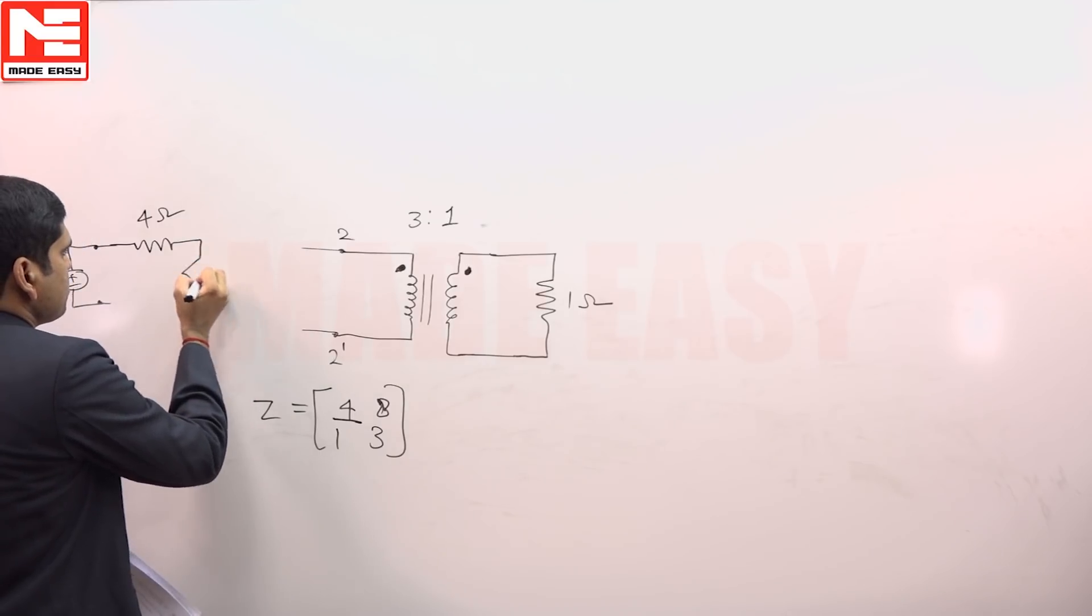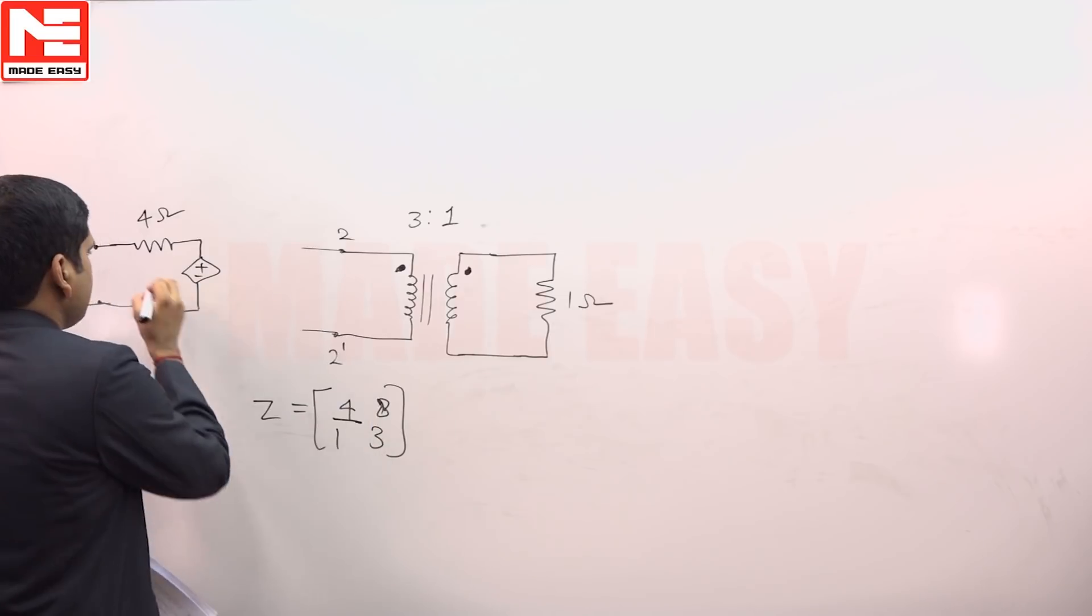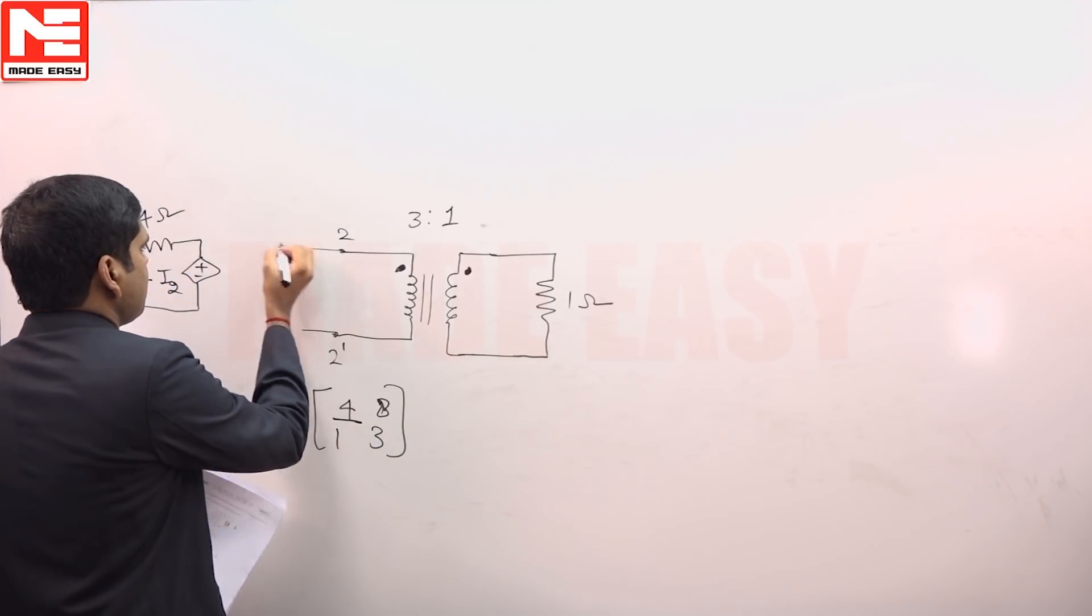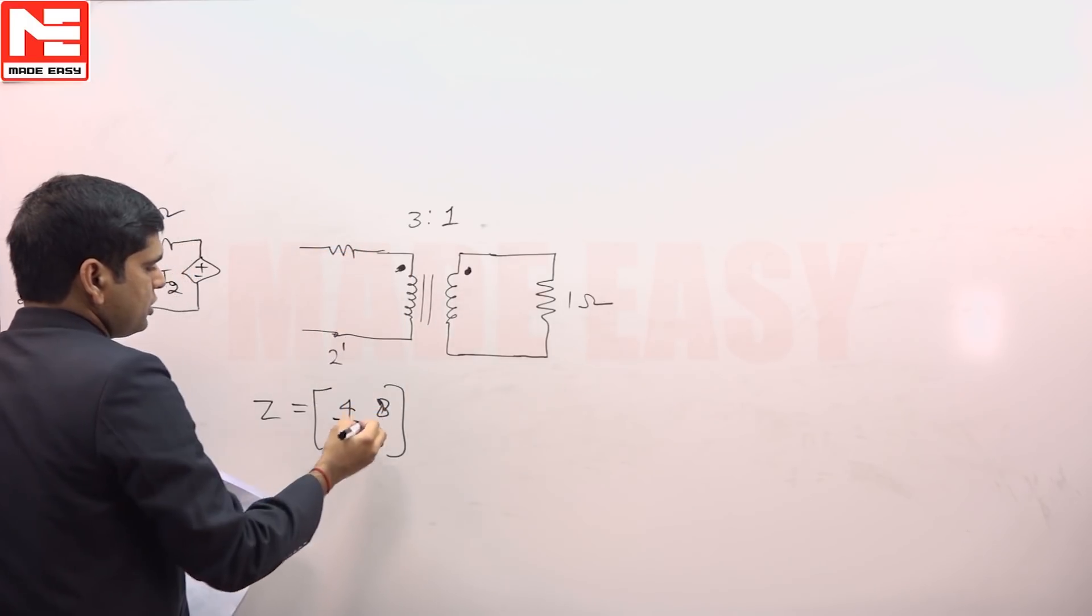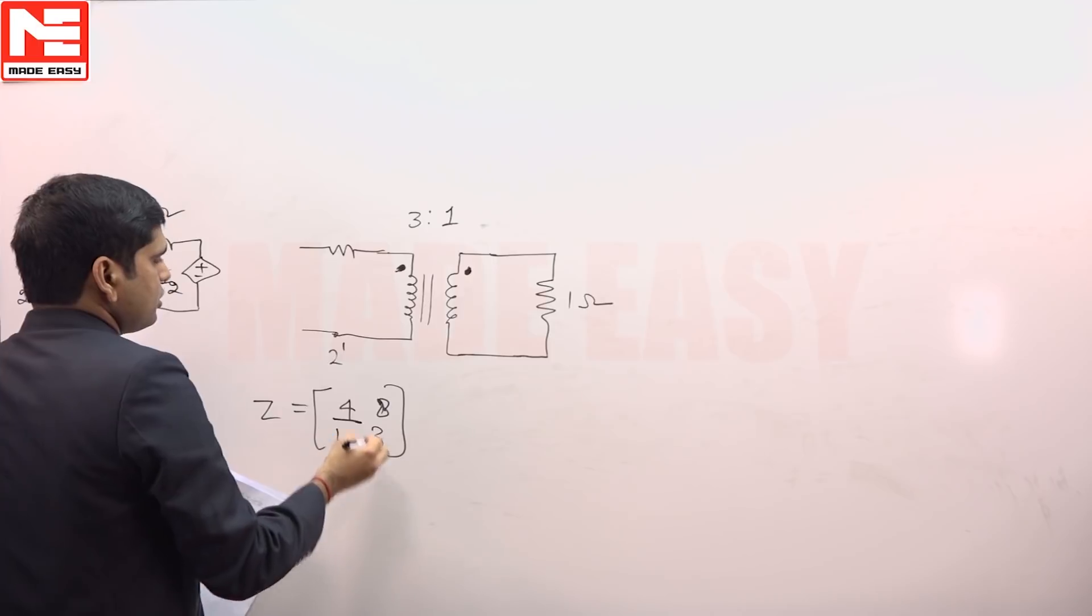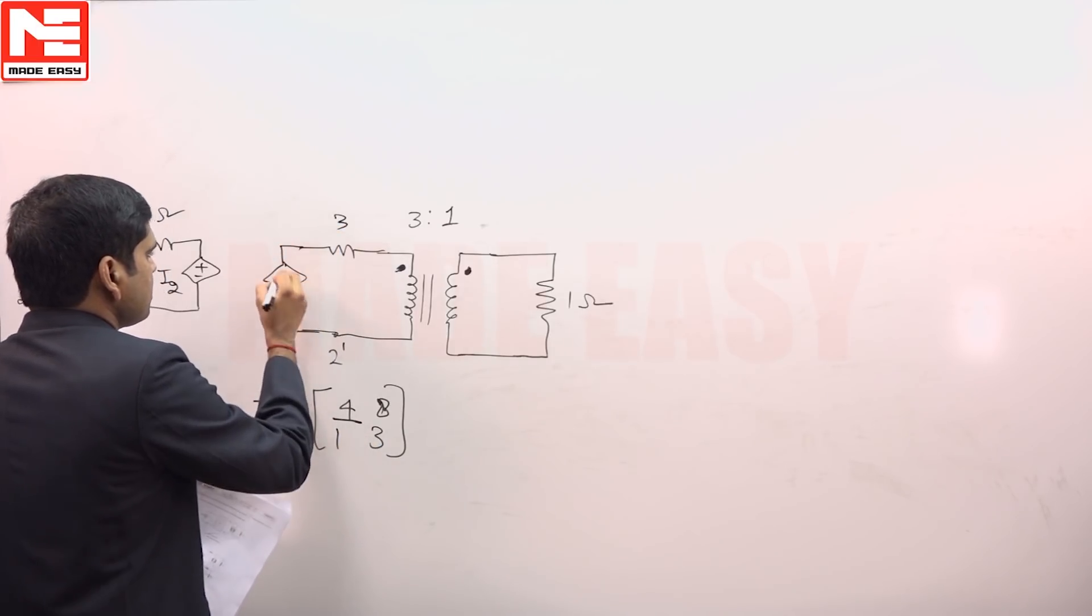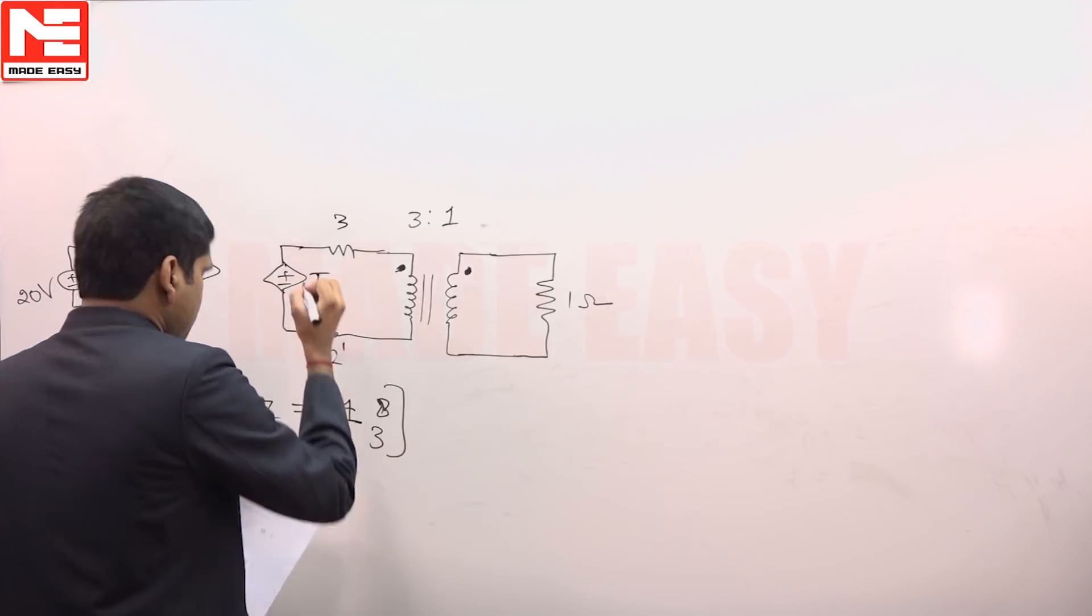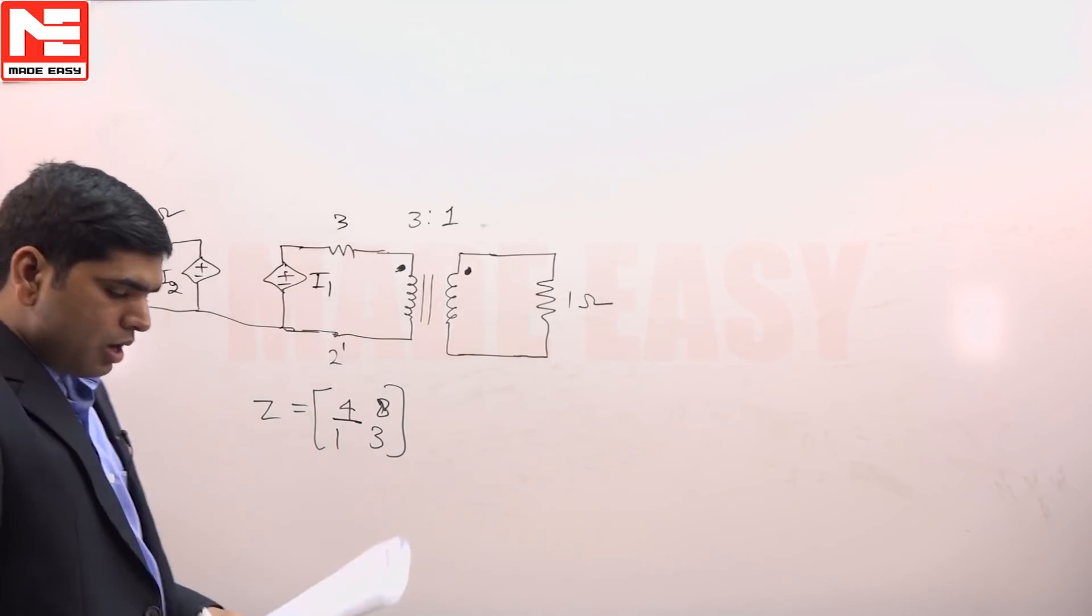Then here Z22, Z22 is this resistance 3, and then our dependent voltage source, this dependent voltage source is 1 into I1, and this is connected like this.